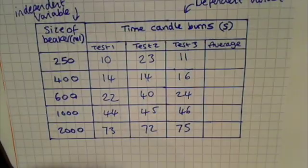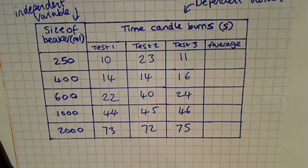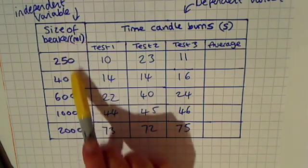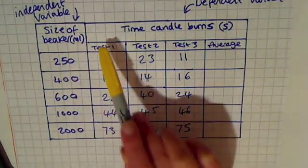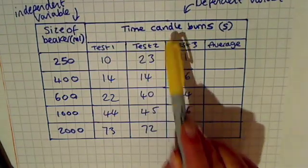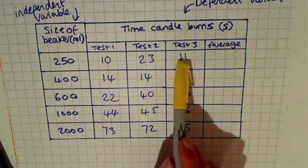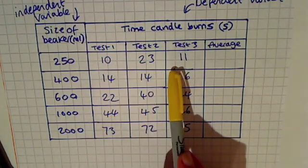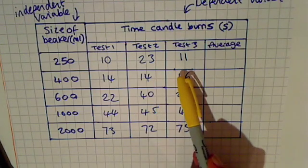This video is about identifying anomalies and calculating means. I've got a table of results here which looked at how the size of the beaker affected how long the candle burned for. I did three tests and now need to identify anomalies in my tests and then calculate an average.